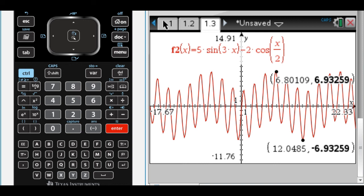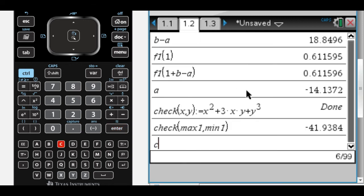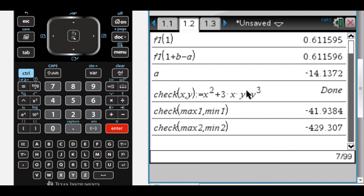And then if I go back to my calculator page, which I think is here, I can do it again. Check. And then max 2 comma min 2. And I'm able to use that function over and over again.